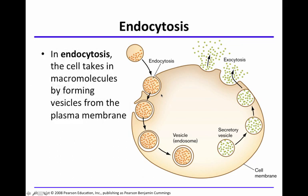Endocytosis, on the other hand, is coming into a cell. 'Cyto' means cell. In endocytosis, a cell takes in macromolecules by forming vesicles from the plasma membrane. So now things are coming into a cell — these macromolecules are coming into a cell.